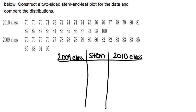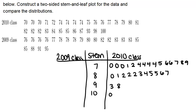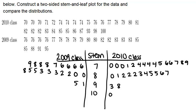The range is from 70 to 100, so the stems will be 7, 8, 9, and 10. For the 2010 class I have 70, 70, 70, 71, 72, 74, 74, 74, and so on. That covers all of our 2010 class data. Now do the same thing for 2009, remembering to keep everything in numerical order.